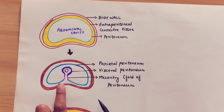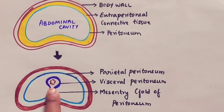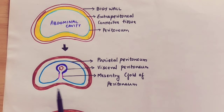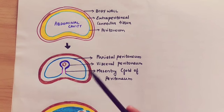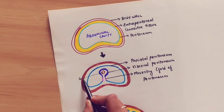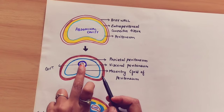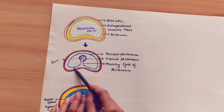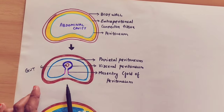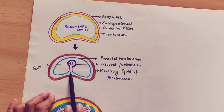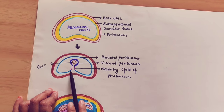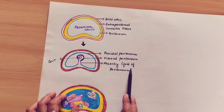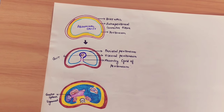Organs develop inside this peritoneal sac. Organs are invaginating into this peritoneal sac. The gut is covered and we call that the visceral peritoneum. The abdominal wall is covered and we call that the parietal peritoneum. When the organ invaginates it creates a fold of peritoneum — the gut covering is called the mesentery. So these are the three divisions of the peritoneum.